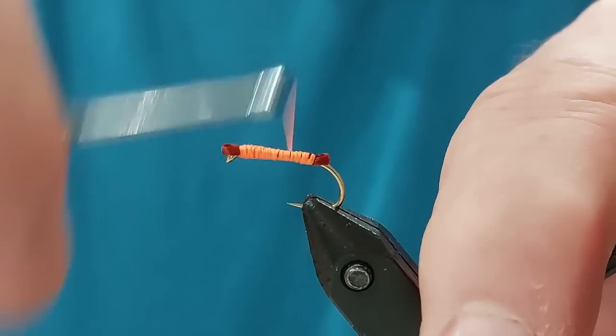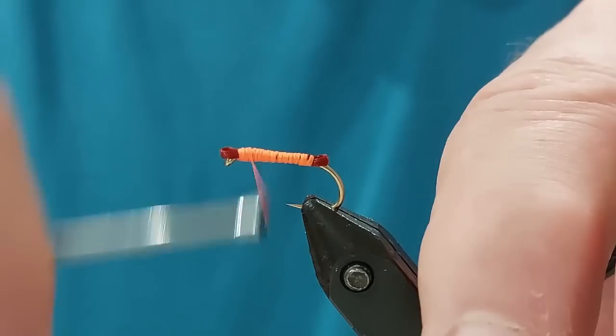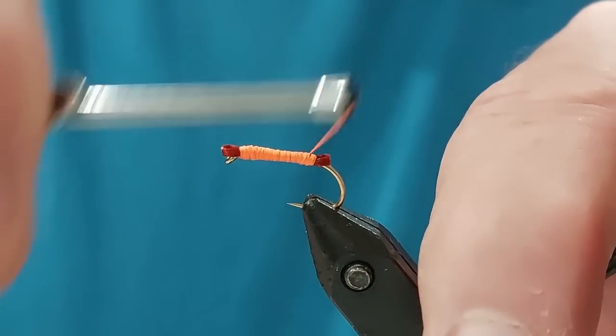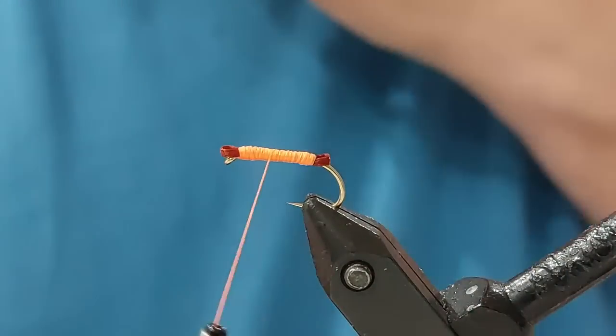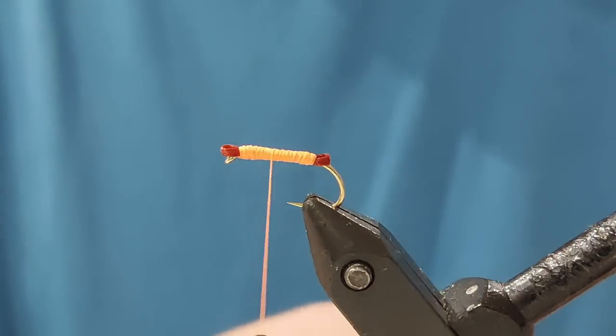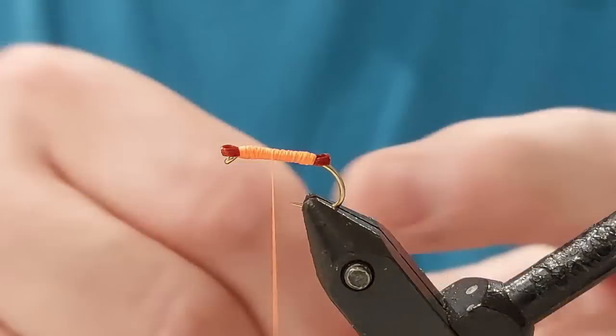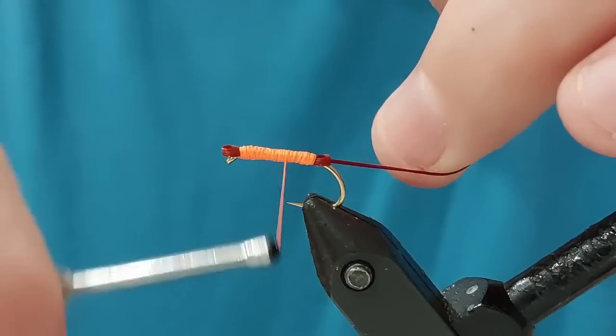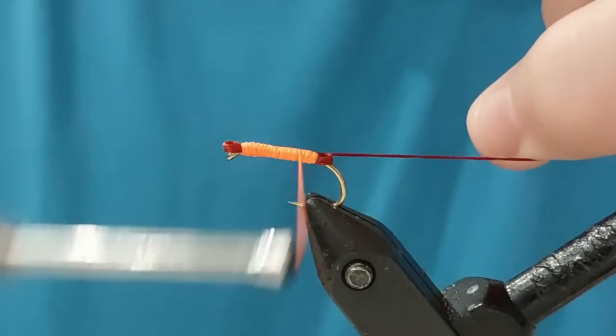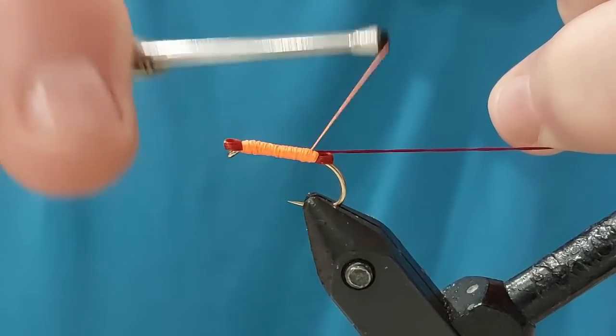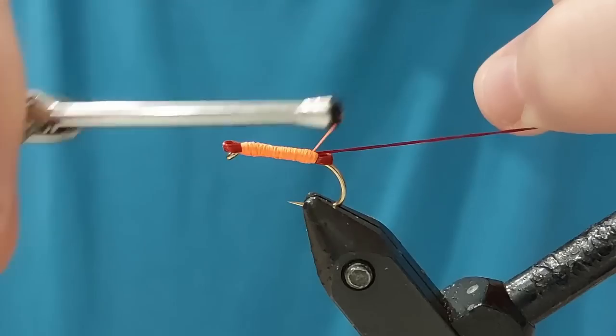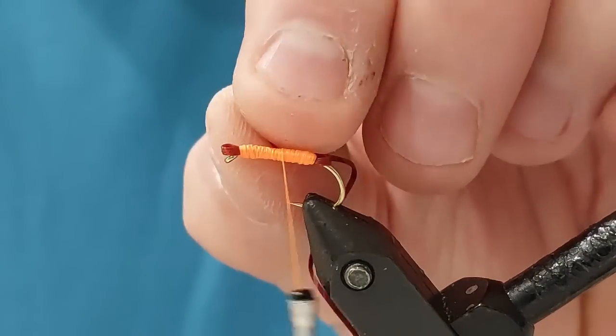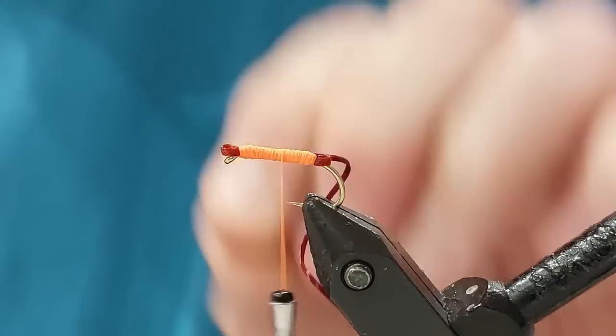Just create a little bit of the body. Now we're going to put a rib in this, again with the flexi floss. So we'll just take a small piece, tie it in. Then we're going to pull this tight so there's no bulk, go to the back end of the fly. Again, pull that tag tight, cut it off.